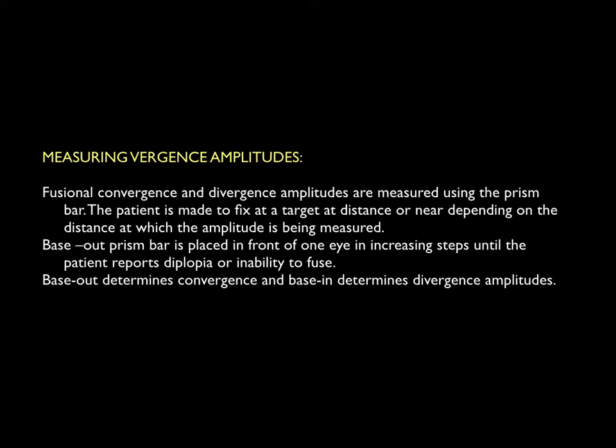In the assessment of binocular single vision, measurement of fusional convergence and divergence amplitudes is very important, and this can be done using a prism bar. The patient is made to fixate a target for distance or near, depending on the distance at which the amplitude is being measured. For checking convergence amplitude, a base-out prism is placed in front of one eye in increasing steps until the patient reports diplopia. For determining divergence amplitude, a base-in prism is used.